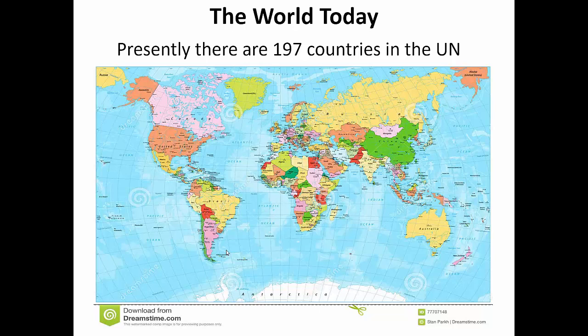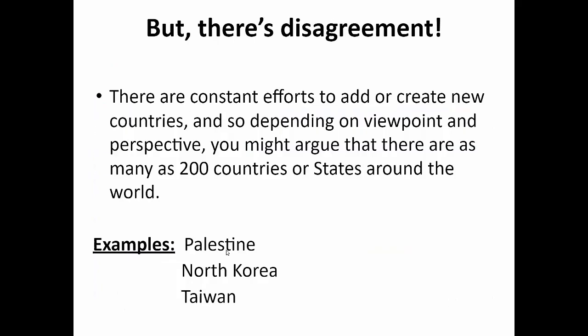We'll get into some of the reasons why as part of this presentation. Today, 197 countries — those empires have been gotten rid of, and instead we have essentially independent states all over the world, almost 200 of them.